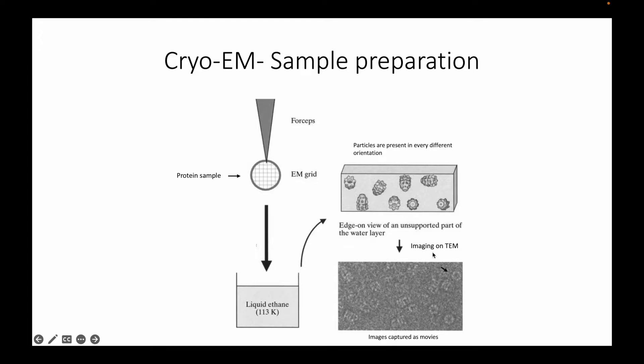After vitrification you go on to use a transmission electron microscope to image your sample. So this is an example of a cryo-EM micrograph. The images captured are referred to as a micrograph and these protein particles you can see in this micrograph are shown with an arrow here. This is what these particles usually look like.